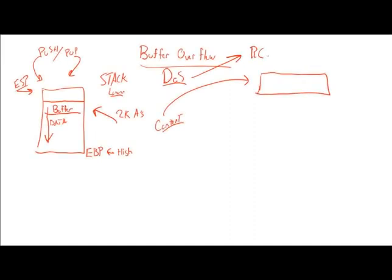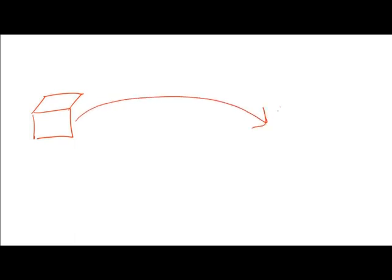What an attacker would do to completely compromise a system is what's referred to as remote code execution. So what does that actually look like? You've got your attacker and you'll have a vulnerable application.